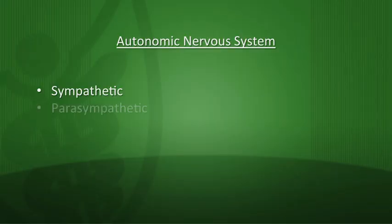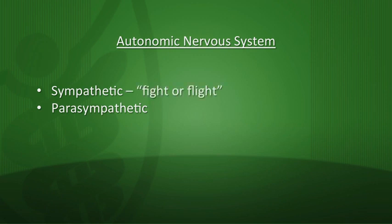The autonomic nervous system is the part of the peripheral nervous system that helps regulate many of our bodily functions — and luckily, it does this automatically. Where somatic nerves are under voluntary control, the autonomic nervous system is unconscious. There are two opposing forces: the sympathetic nervous system, associated with fight or flight, and the parasympathetic nervous system, associated with rest and digest.